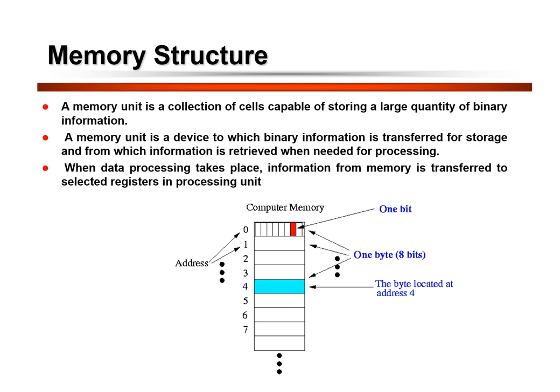The memory cells are made up of storage cells — for example, transistors — that can be programmed to store binary information in the form of 1s and 0s. Each word stored in a memory location is represented by an address.